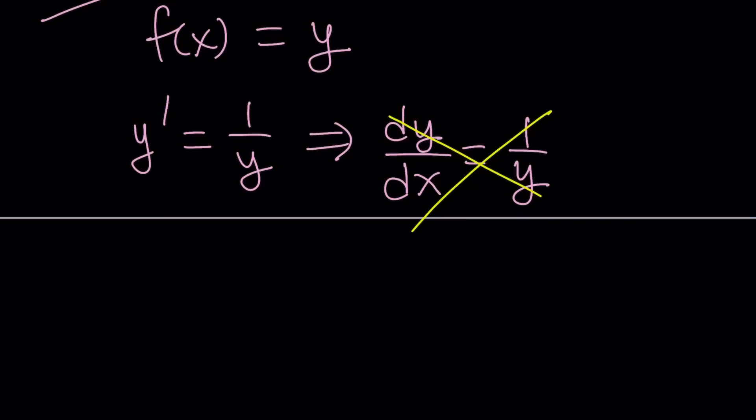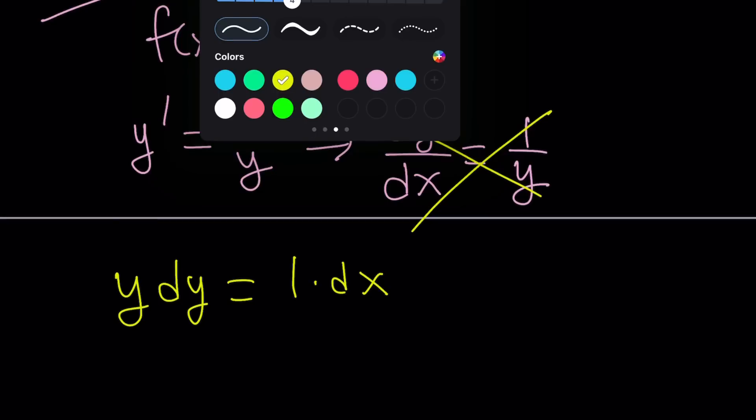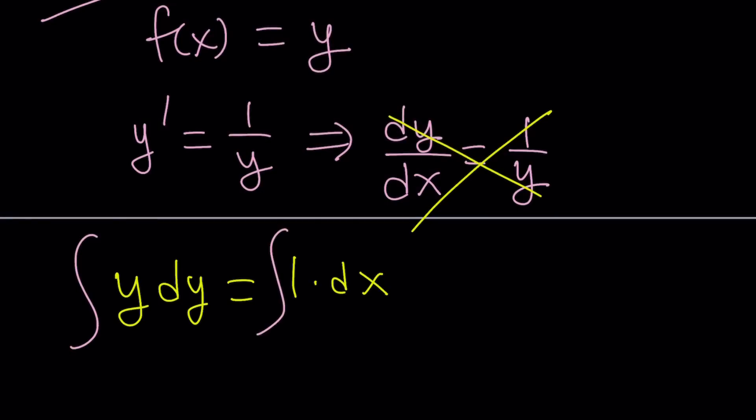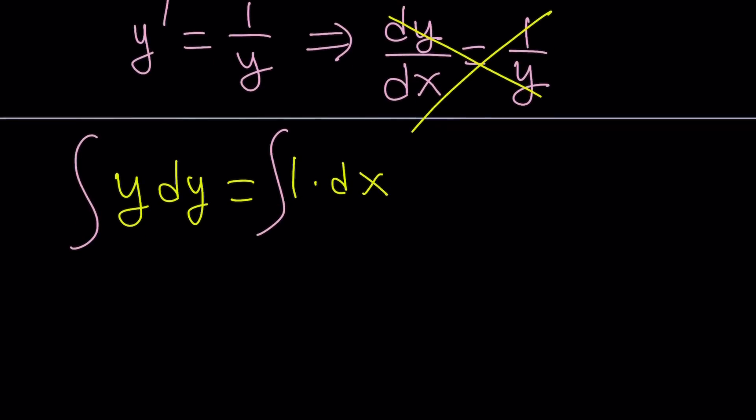If you cross multiply you get y dy equals 1 dx. And then if you go ahead and integrate both sides then on the left you're going to get y, the integral of y with respect to y. So what's the integral of any power of y? Like y to the n. y to the power n is y to the power n plus 1 over n plus 1 plus c, remember?